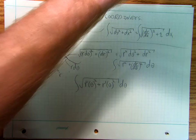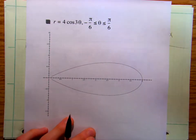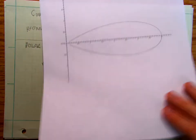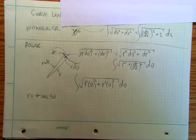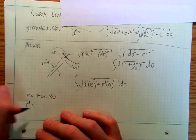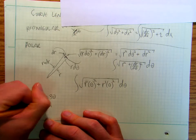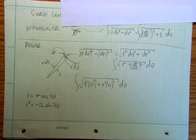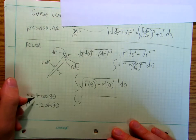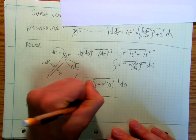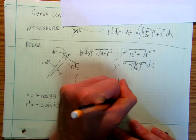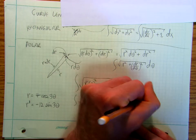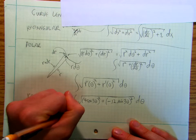Let's work through an example. We have r equals 4 cosine(3θ), which gives us r prime equals negative 12 sine(3θ) — a nice chain rule problem. So we set up the integral of the square root of (4 cos(3θ))² plus (−12 sin(3θ))² dθ, going from negative π/6 to π/6.